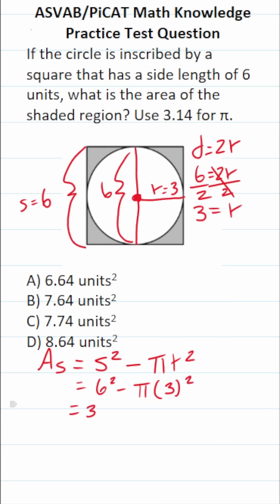This becomes 3 squared. 6 squared is 36 minus, we're told to let pi be 3.14, so this is 3.14. And 3 squared is 3 times 3, which is 9. So let's go ahead and work out the rest of this.